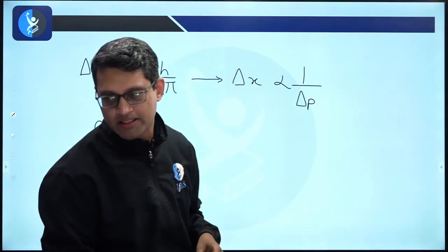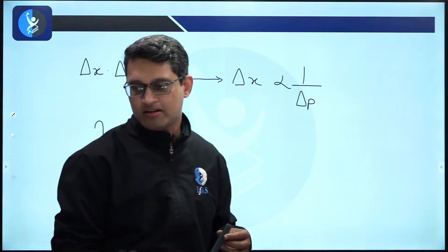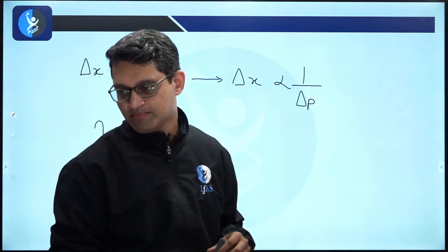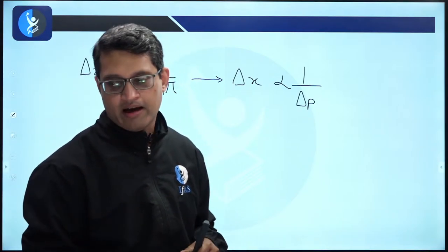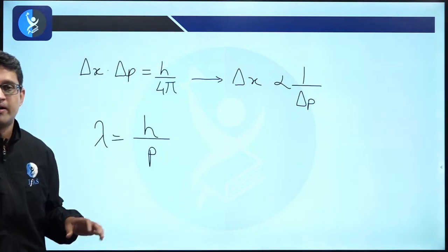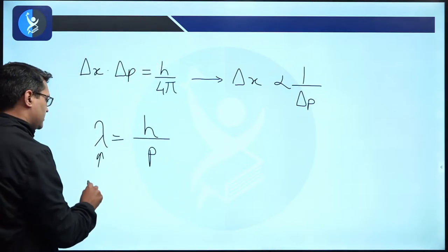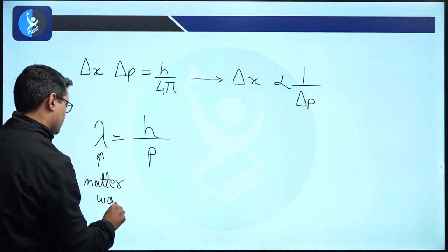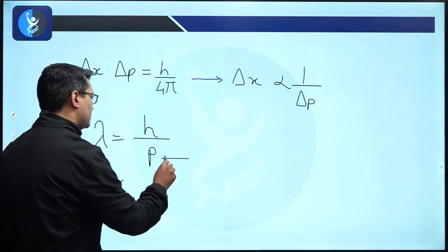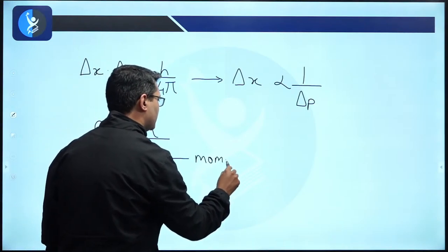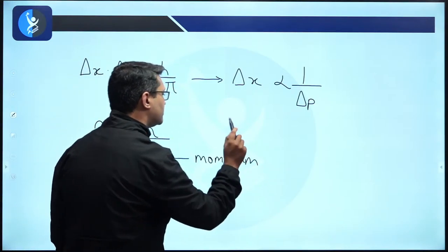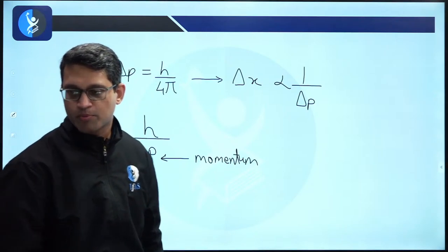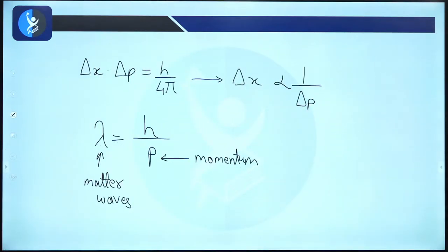Lambda is equal to h upon p — that is the de Broglie equation, which is called wave-particle duality. Lambda represents matter waves and p is linear momentum. Any object exists simultaneously as a particle, which has momentum, and as a wave with wavelength lambda.